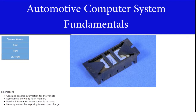Electronically erasable programmable read-only memory, or EEPROM, contains specific information for the exact vehicle in which the computer is installed. Sometimes known as flash memory, it retains information when the power is removed from the system. EEPROM can only be erased by exposing it to an electrical charge to allow new data to be installed.